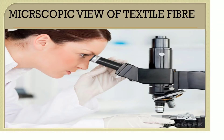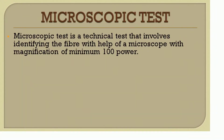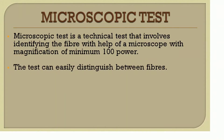In the previous class we learned identification of textile fibers by using the burning test. Today we are going to identify textile fibers by using a microscope. Microscopic test is a technical test that involves identifying the fiber with the help of a microscope with a magnification of minimum 100 power, so we maintain 100 magnification power so that the structure of fibers can be seen clearly.